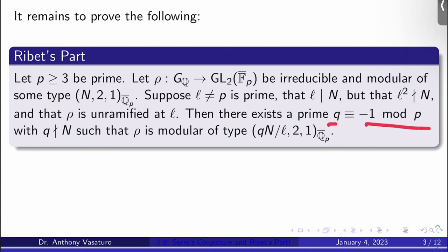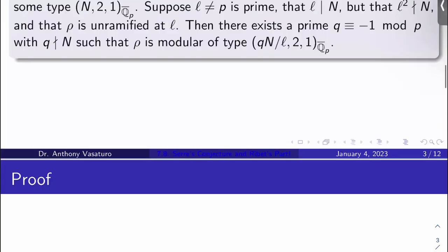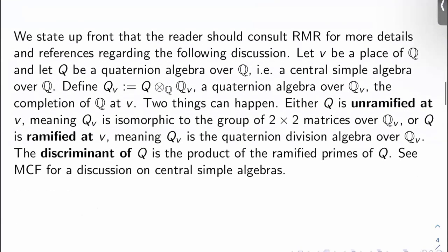Then there's a prime q, which is -1 mod p, that doesn't divide N, such that ρ is modular of type (qN/ℓ, 2, 1) over Q̄_p. So we're able to lower the level by dividing out the level by ℓ at the expense of raising the level by q, but then remember Mazur's part will take care of that q. Okay, so let's look at the proof of this. Again, we'll be doing this over the course of two videos because it's quite difficult.